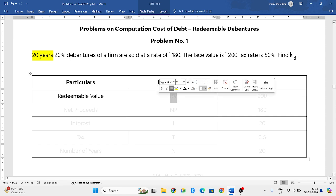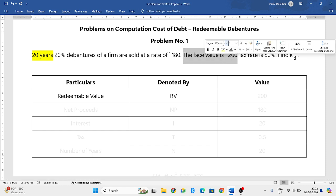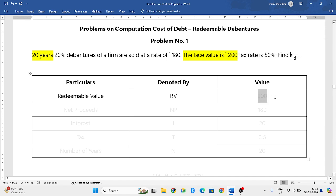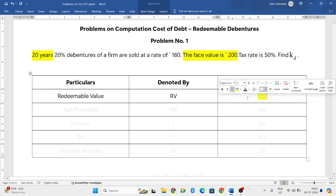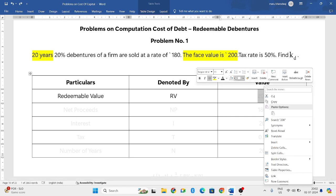In the formula, that is denoted by RV. Here the face value, the actual value is redeemable value. After 20 years, you have to pay 200 rupees.